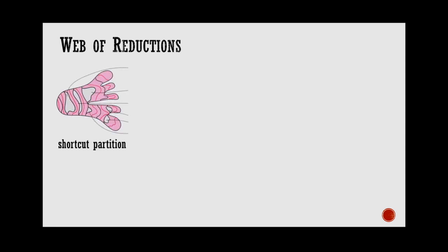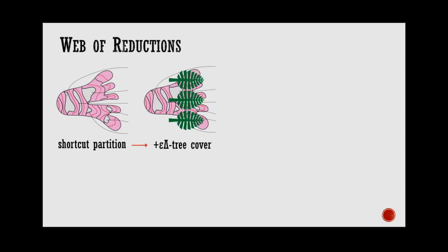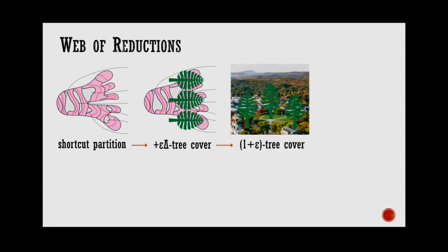Let me sketch how we obtain the result. Our key technical contribution is a partition of the planar graph that looks like a squid or jellyfish. Once you have this partition, you can construct a tree cover with additive distortion guarantee — the error is not beta times the distance, but plus ε times the diameter. Then using standard hierarchical clustering and building the additive distortion tree cover at every level, you get the multiplicative result. The ε^{-3} log(1/ε) factor comes from converting additive to multiplicative distortion.